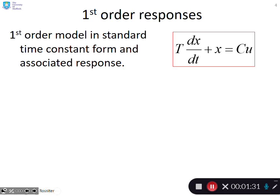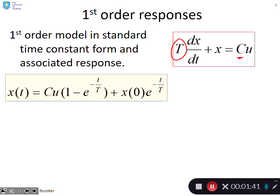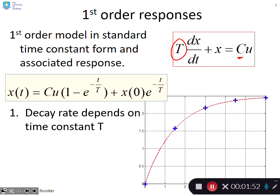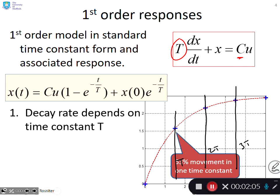For first-order responses, I would expect people to know how to put a first-order model into standard time constant form with time constant τ and steady-state gain C. I would expect them to know the standard step response starting from a non-zero initial condition. The decay rate depends on the time constant τ, and you get a 63% movement in one time constant.